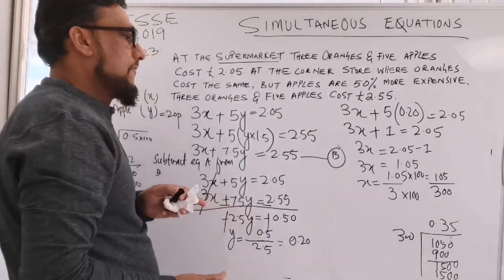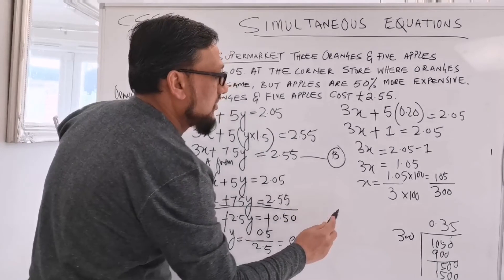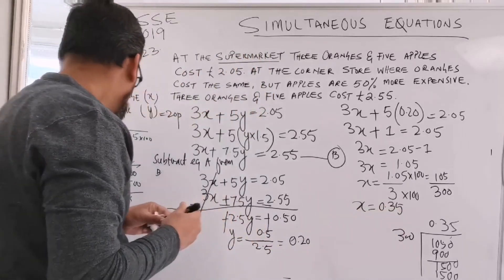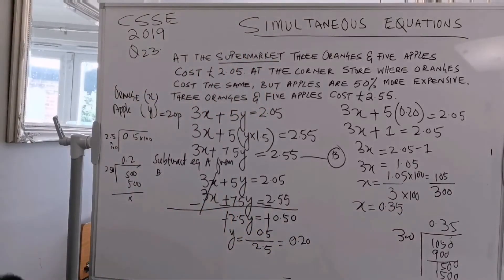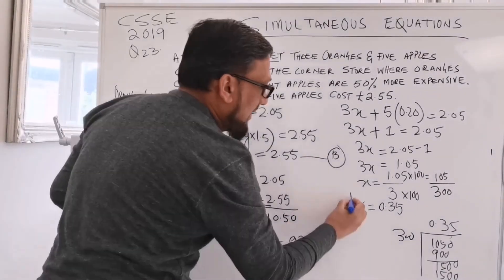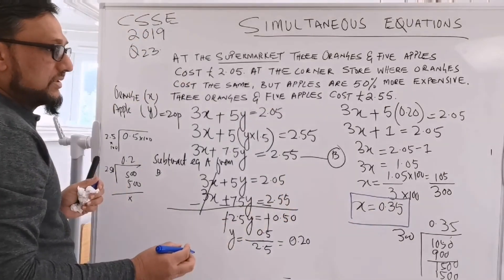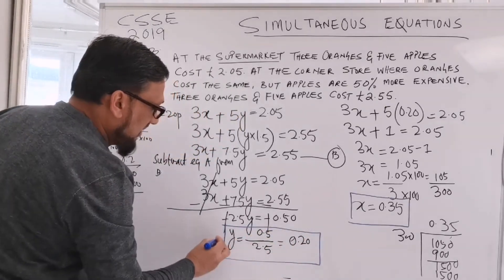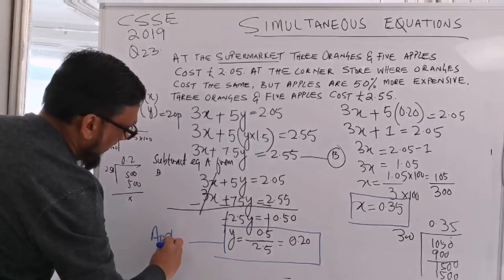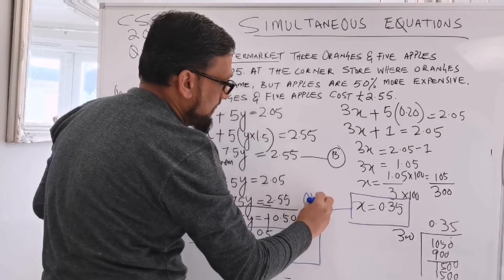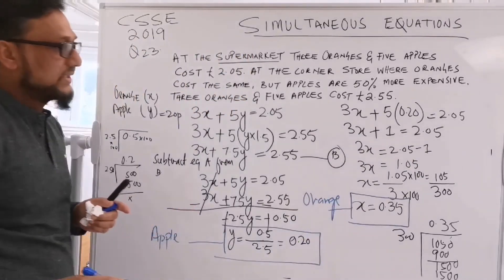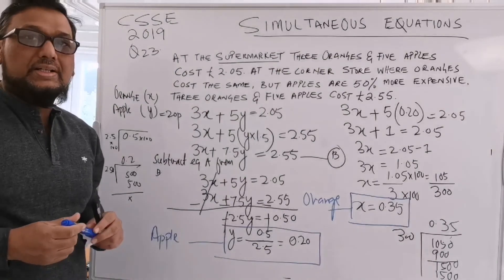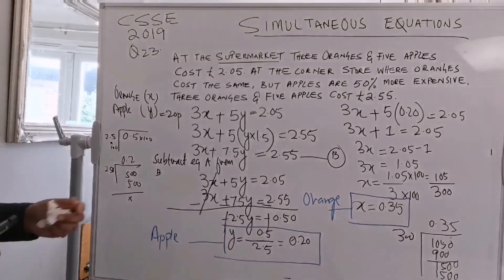So the value of x equals 35 pence, meaning x equals 0.35. The value of y, which is apple, is 20 pence, and the value of x, which is orange, is 35 pence. So you can find out the price of apple and orange using simultaneous equations.